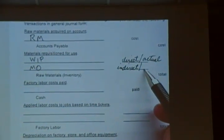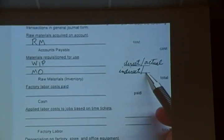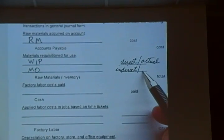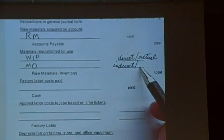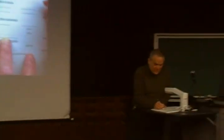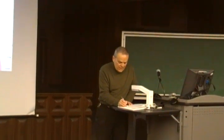Debit manufacturing overhead — how much? It's actual or applied. That's precisely the reason we're playing this game, so that you'd make that mistake today and never make that mistake again. If you debit work in process with actual and debit manufacturing overhead with actual, the sum of this credit is actual. Debits and credits have to equal.